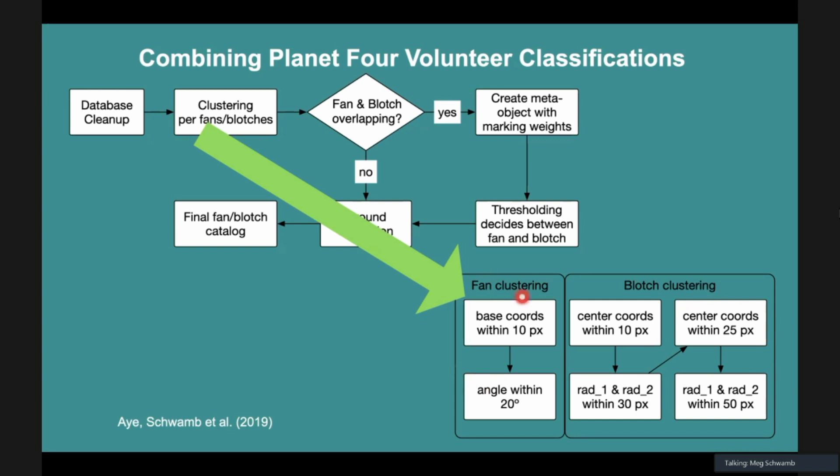It's detailed in Schwamb et al. 2019. The idea is we take the base position, the edge of that ice cream cone and the center of the ellipse. We use that to cluster with some looking at the angles and positioning, mainly for the ice cream cone feature, but also for the ellipse, and then look at the overlapping features. By doing this, we're not looking at one person. We're taking the majority effective vote. For us, we say that if 50% or more of the volunteers identify it as being a fan, then we keep that as a fan. It takes at least three volunteers to have marked the same feature for us to identify it as being a source.